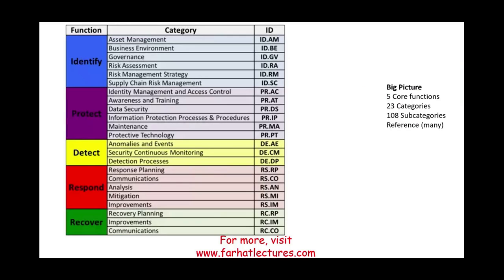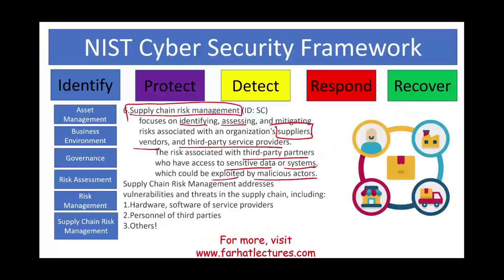To recap: we looked at one of the five core functions — identify — and covered six of the 23 categories. We don't go into subcategories because they get very specific, but you can learn more if needed. In the next session, after completing identification, we move into the protect step, using the same format. Go to Farhat Lectures for additional resources, whether you're studying for the CPA exam, accounting information systems, cybersecurity certification, CISA, or any other professional certification. Invest in yourself — study hard, stay motivated, and stay safe.